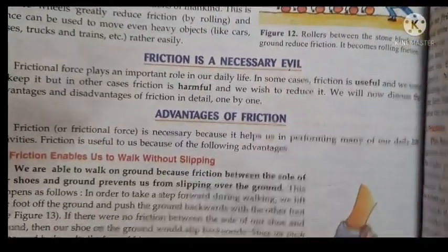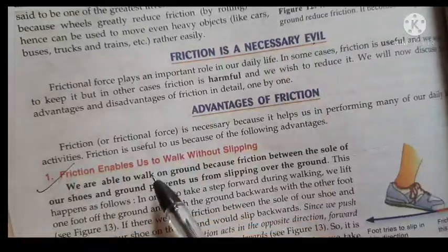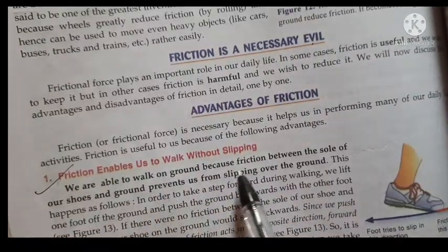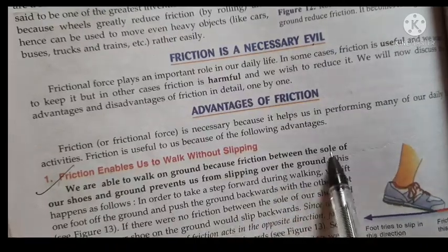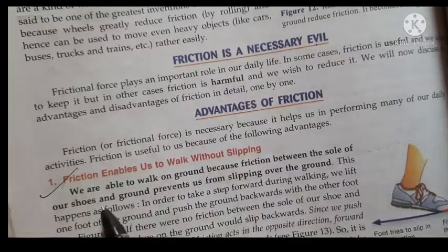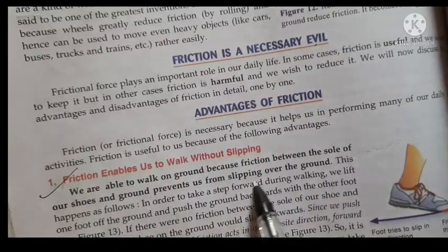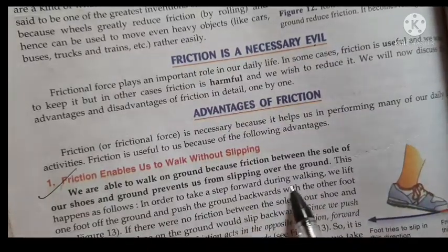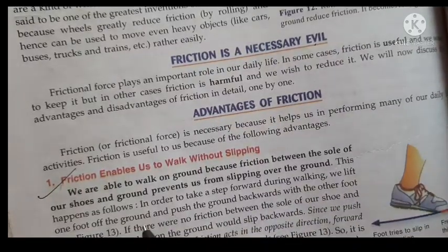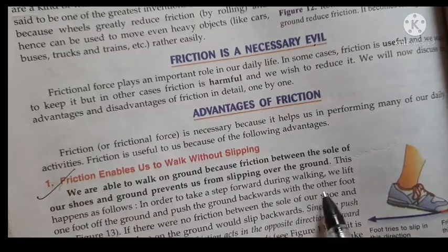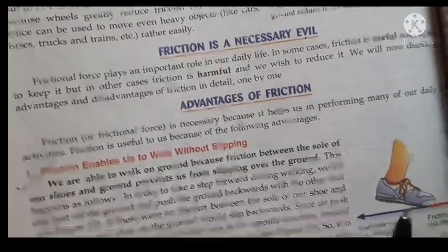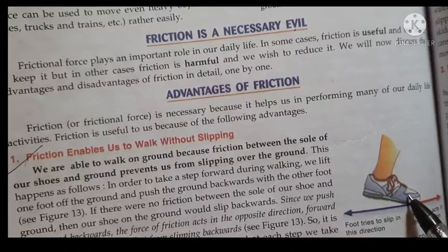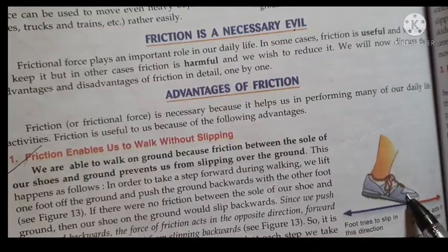Mark the first point: friction enables us to walk without slipping. We are able to walk on the ground because of the friction between the sole of our shoes and the ground, which prevents us from slipping. In order to take a step forward during walking, we lift one foot off the ground and push the ground backward with the other foot.